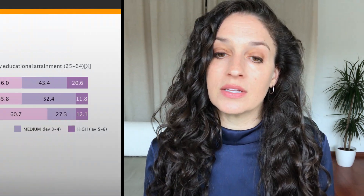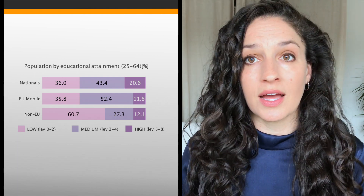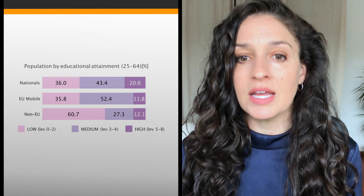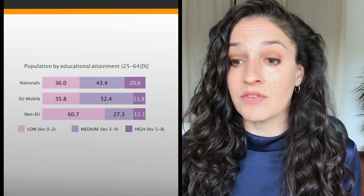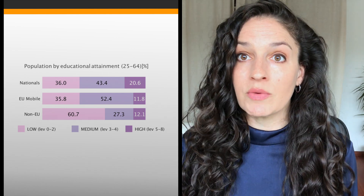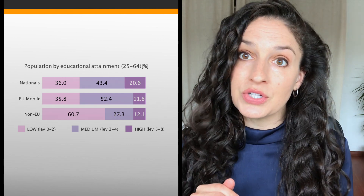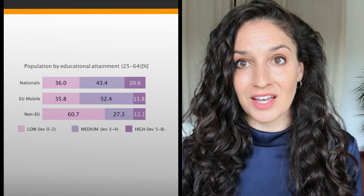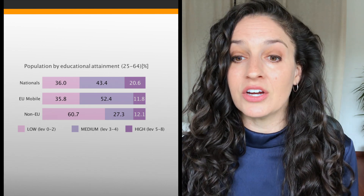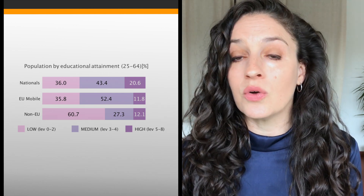Now let's look at education rates. Nationals and European immigrants have similar educational profiles, though nationals have slightly higher rates of high-level education. EU immigrants are well represented at the medium education level. The notable difference is with non-EU immigrants: 60% have low-skilled education, while only around 40% have medium or higher skilled levels of education.